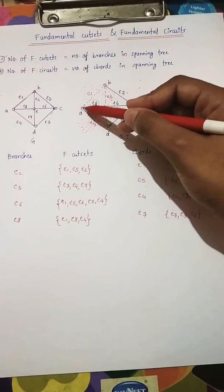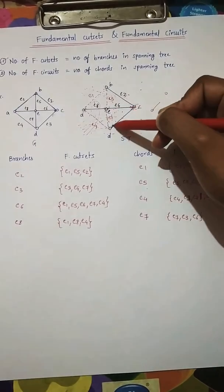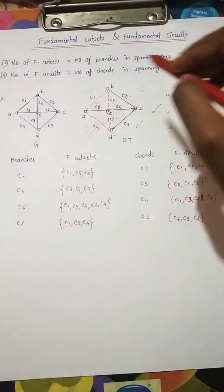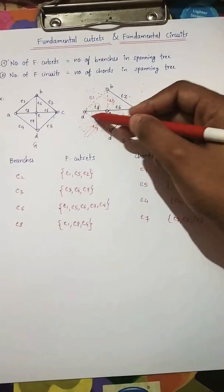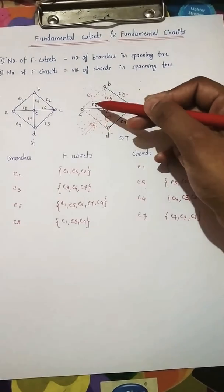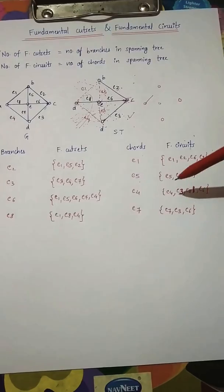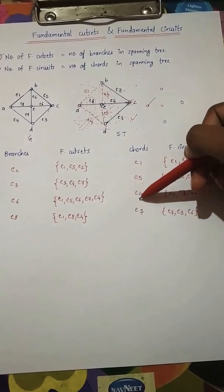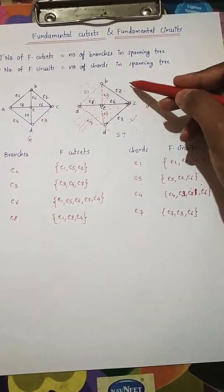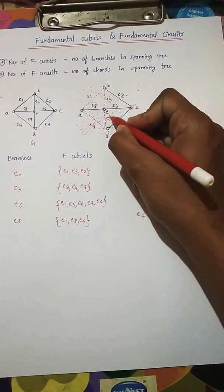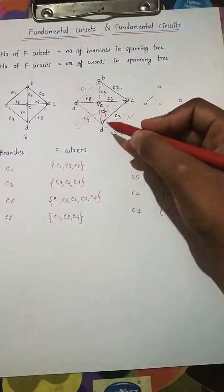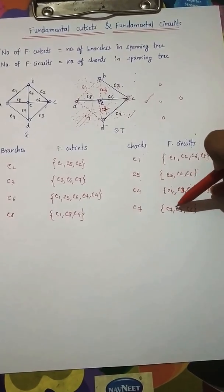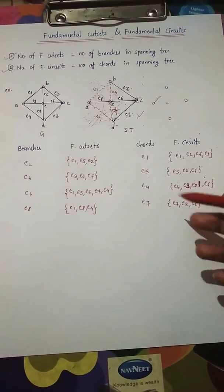For chord e4, we need only one chord and more than one branch. If we consider e4, e7, e8, e6, e8, there are two chords which is not allowed. So the correct fundamental circuit for e4 is {e4, e8, e6, e3}. For chord e7, we need only one chord and two branches, giving the fundamental circuit {e7, e3, e6}.